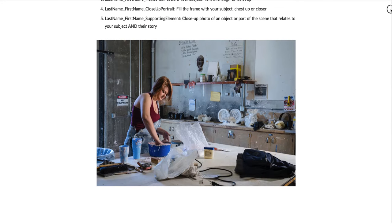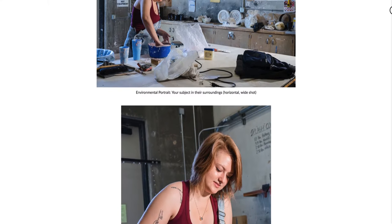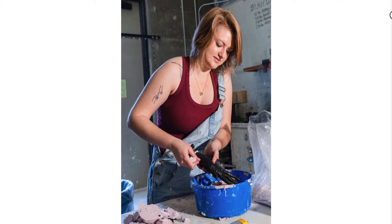An environmental portrait is a portrait of your subject in their surroundings. For this portrait story I'm showing you, I shot a college student who's an artist - she does sculpture. We met at the studio at school, and I took a photo of her working in her surroundings, showing her in the place where she's actually working - that's what we call an environmental portrait. Next, I did a vertical portrait - this is her working again, and vertical meaning up and down versus side to side.